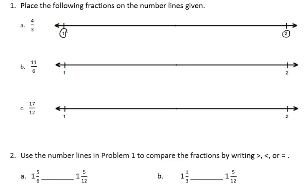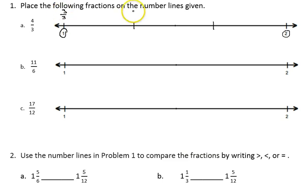If I start with 4 thirds, the one whole mark would represent 3 thirds. 3 thirds is the same as one whole. Now I just have to divide the distance between the 1 and 2 into thirds. And I need to show where 4 thirds falls. Again, 1 whole is 3 thirds, so 4 thirds would be the next third past 1 whole.